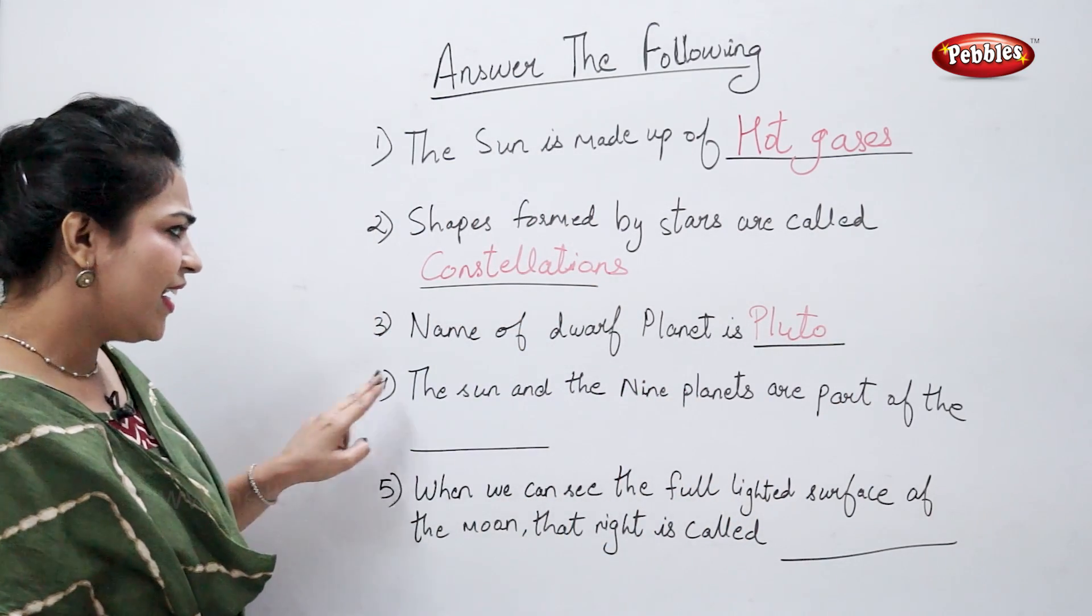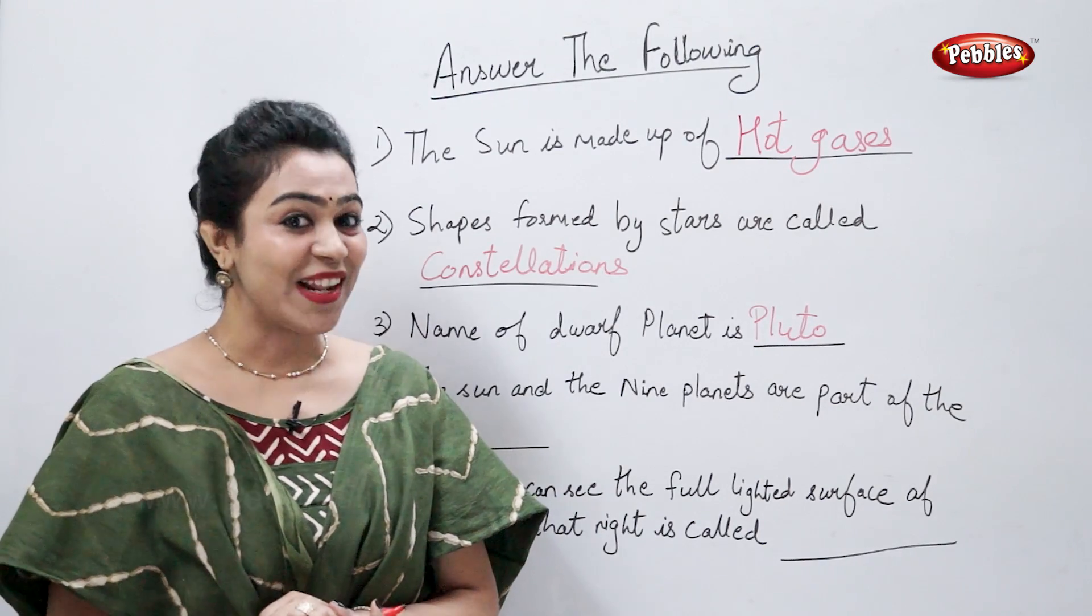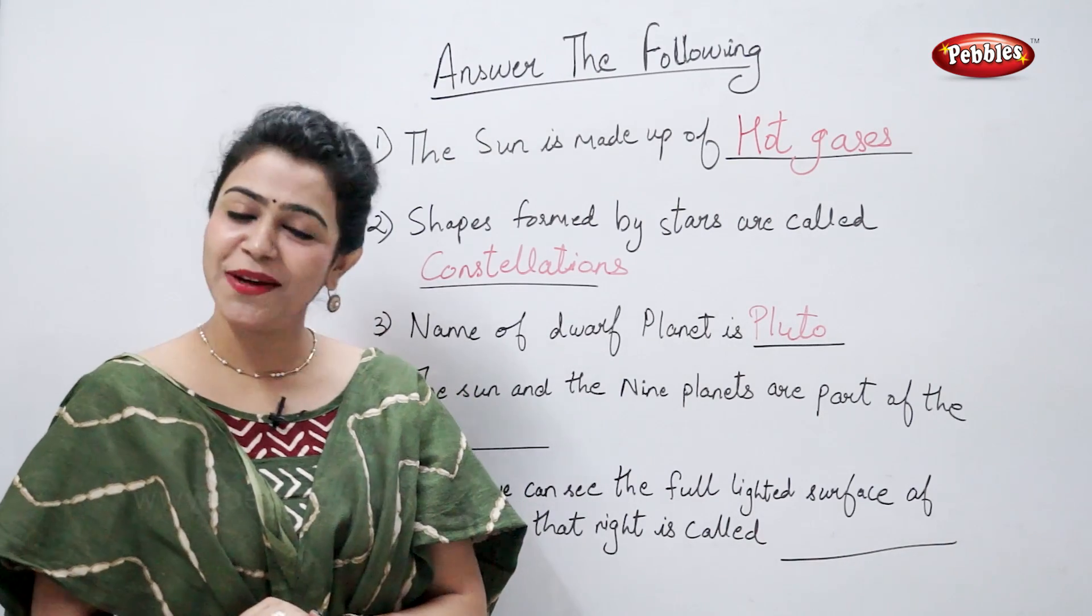The sun and the nine planets are part of the, yes, solar system.